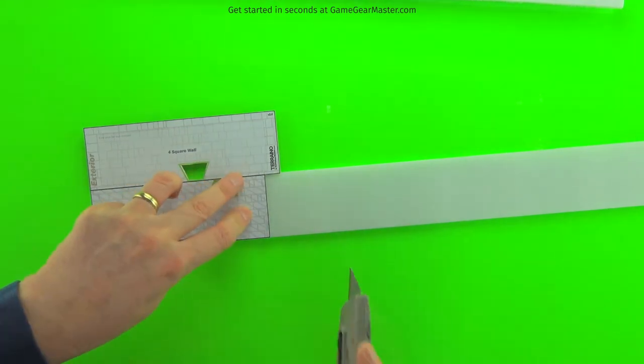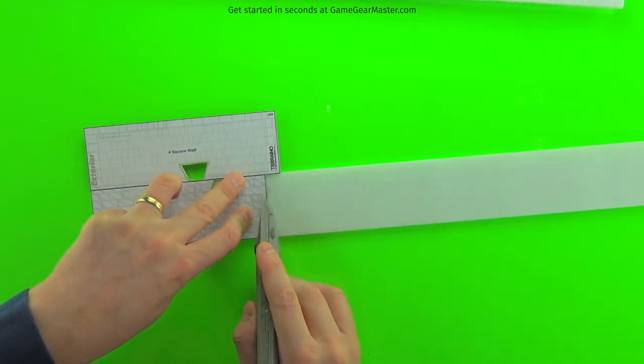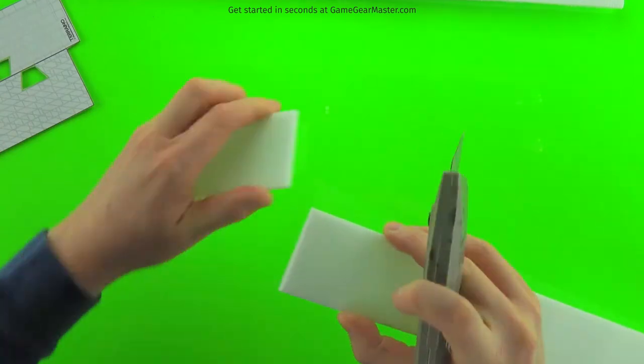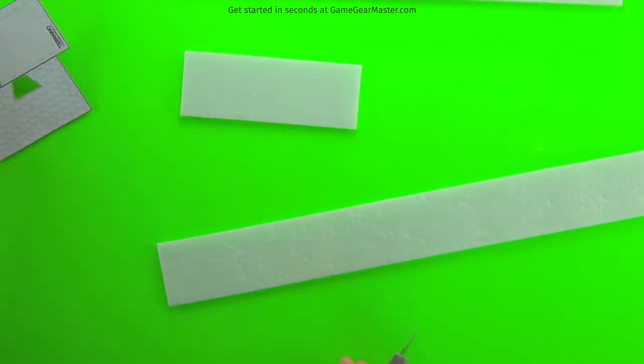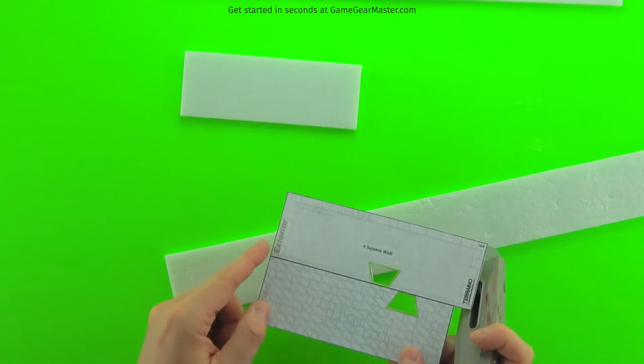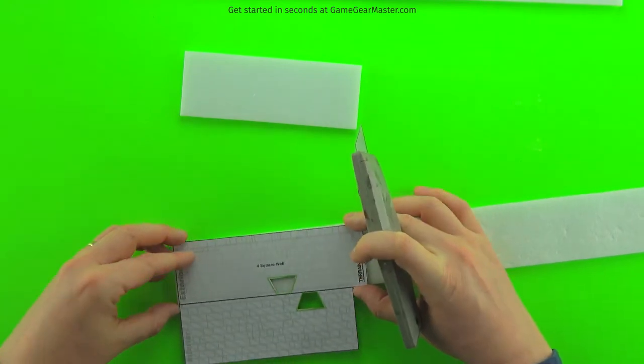And it's as easy as lining up the template, scoring the edge of the foam and snapping it off. Now remember, you're going to need one interior piece for every two exterior pieces. So you're going to cut off two pieces here.